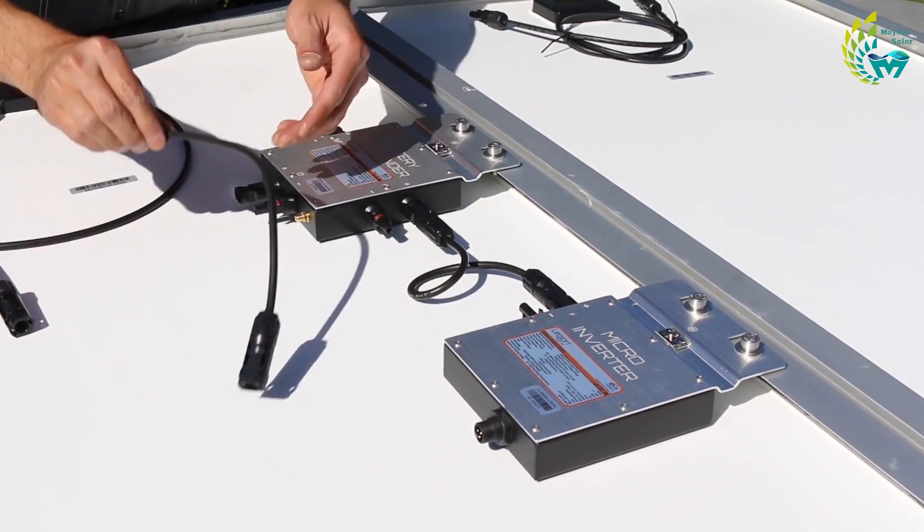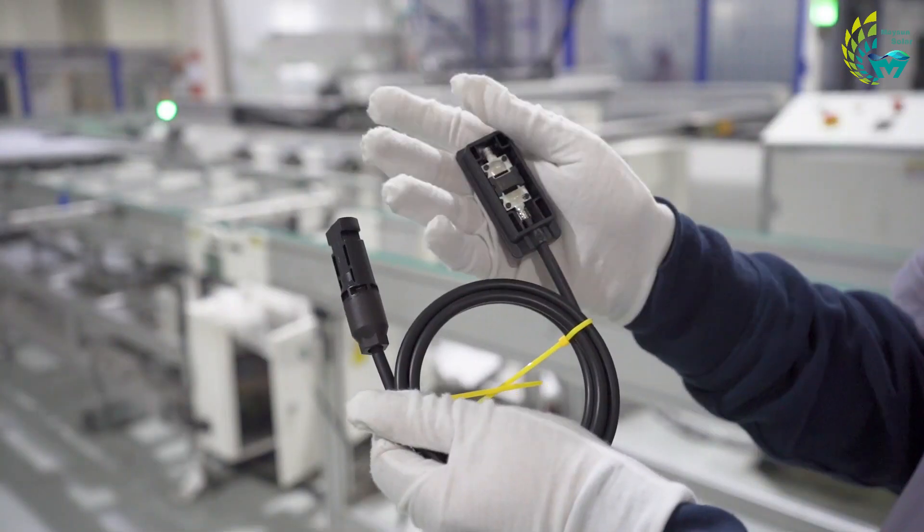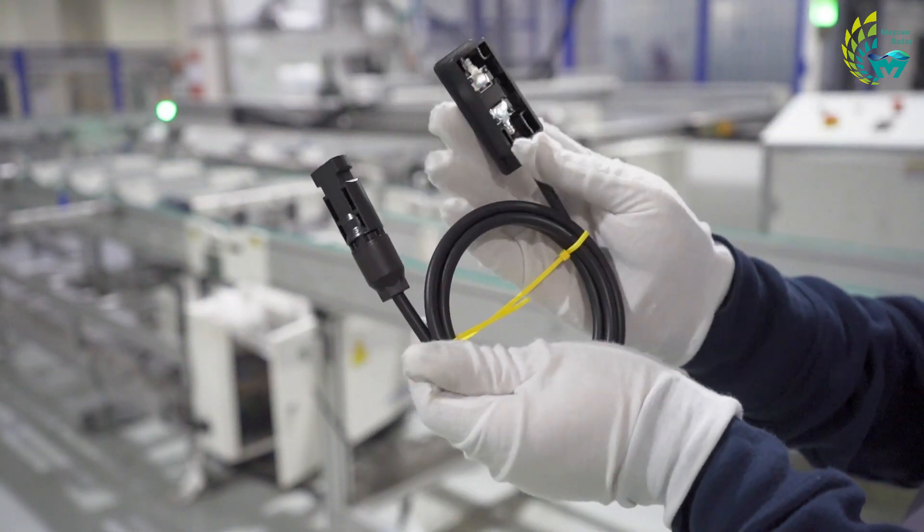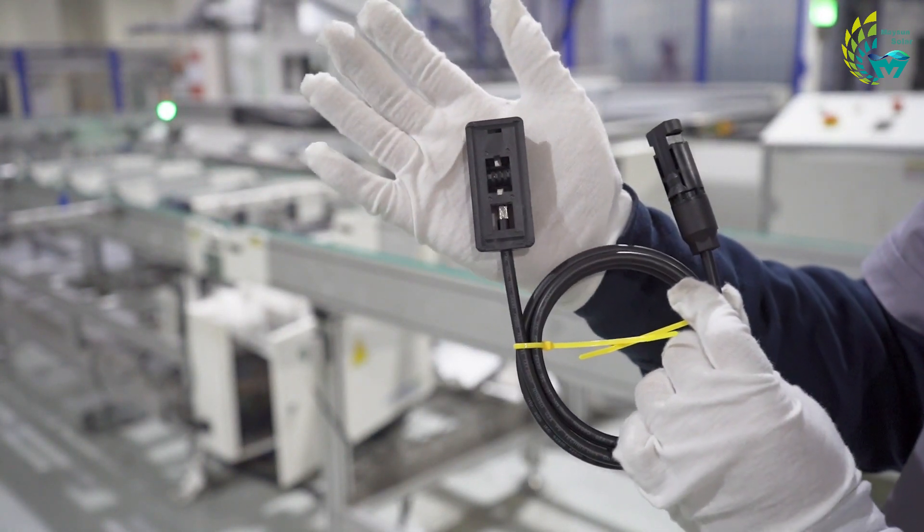In order to minimize the power loss of the junction box to the modules, the conductive material used in the junction box requires low resistance, while ensuring that the contact resistance with the lead wire of the bus bar is even lower.